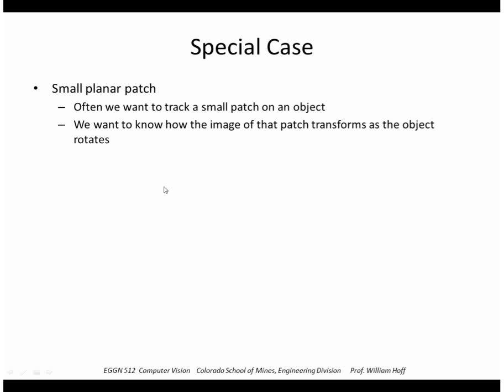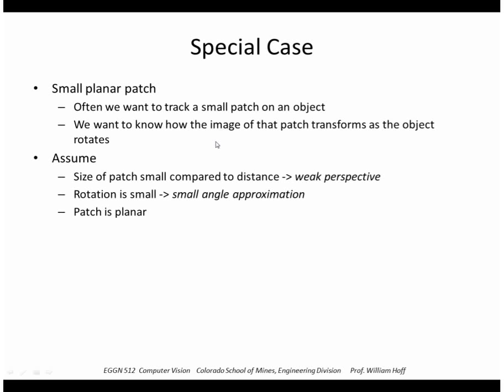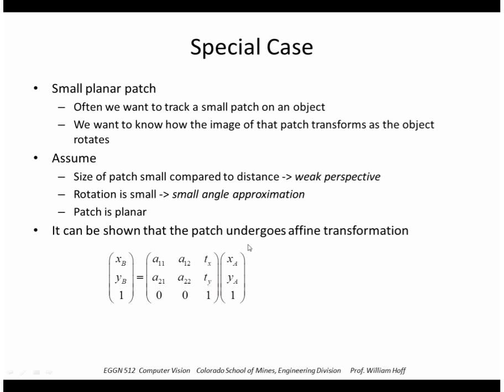To see where this is used, we can look at the case of tracking a small planar patch on an object. If we can assume that the size of the patch is small compared to the distance, we get the weak perspective assumption. If the rotation is small, we're going to use that small angle approximation that I discussed last time. And of course, we're going to treat the patch as a planar patch. So if we can do all this, we can show that the transformation of that 2D image patch undergoes an affine transformation. Recall that affine transformation is basically a rotation, shearing, and scaling, and also a translation. So every point in that patch undergoes this transformation.